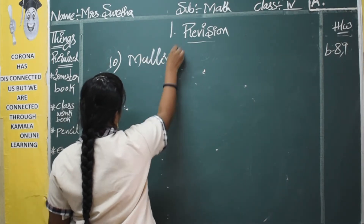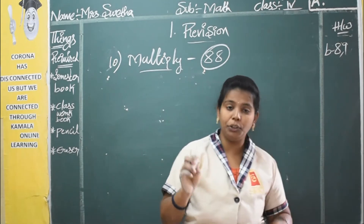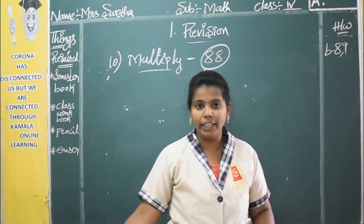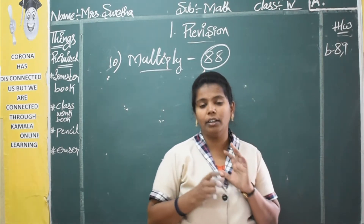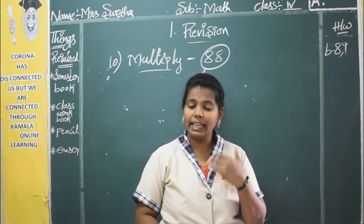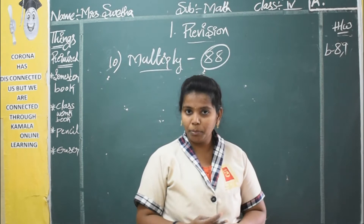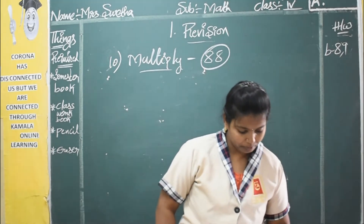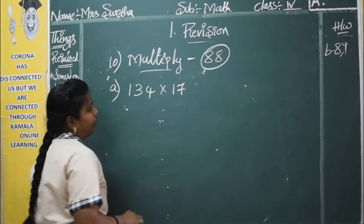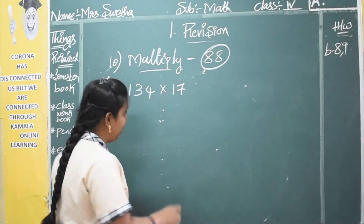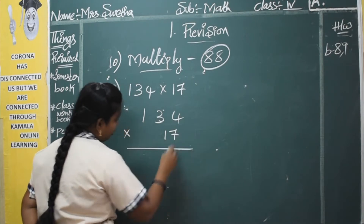The next bit is multiplication. For doing multiplication, you compulsorily need to know your tables — without tables you cannot do anything. I said in the previous class you have to learn up to 20 tables. If you don't know tables, learn at least two tables daily. Without tables you cannot do multiplication. So the first question given is: 134 multiplied by 72. First arrange them in the columns.